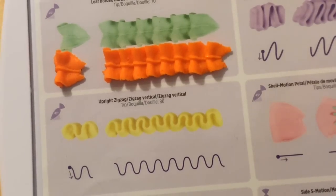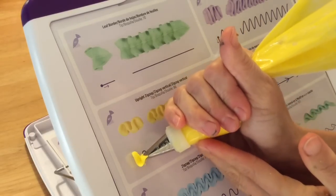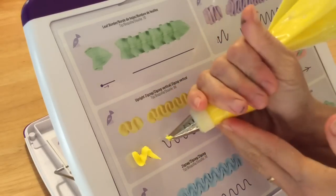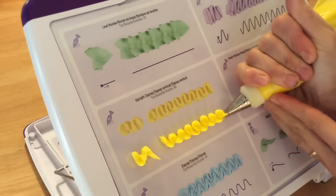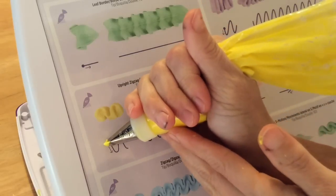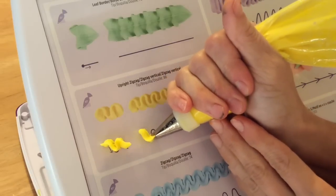Next I'm going to use tip number 86, which has a top part like a star tip and the bottom part like a petal tip. I'm going to pipe this upright zigzag. This is an interesting technique. I haven't actually seen it before. I saw it on this practice board sheet.